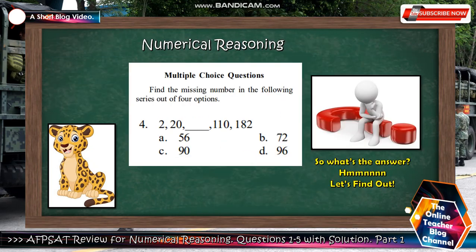Let's go to another question. Number 4: 2, 20, blank, 110, 182. Letter A is 56, B is 72, C is 90, D is 96. So what's the answer? Let's find out.